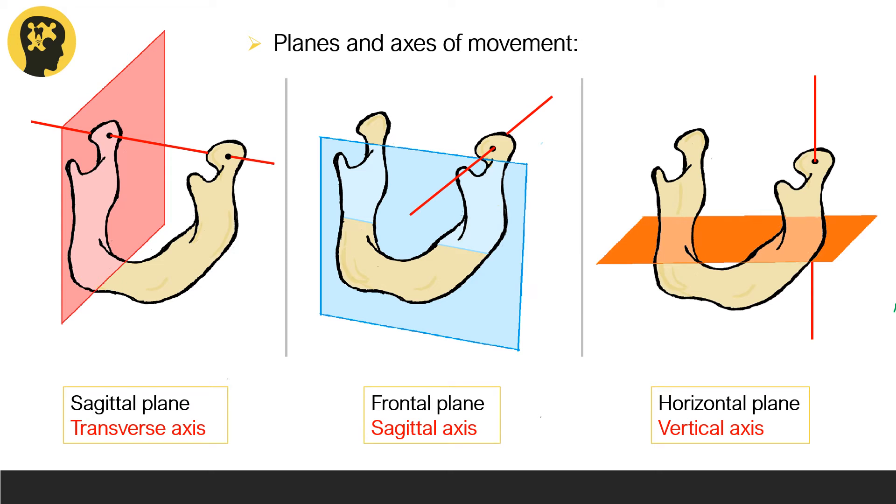Understanding movement becomes a lot easier if we look at the planes and axes of movement. A plane is an imaginary flat surface running through the body, and an axis is an imaginary line about which the body rotates.